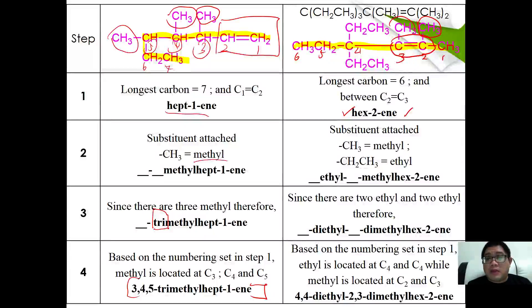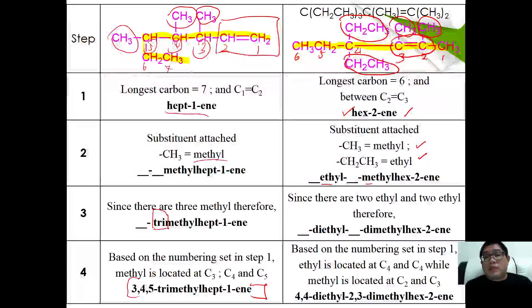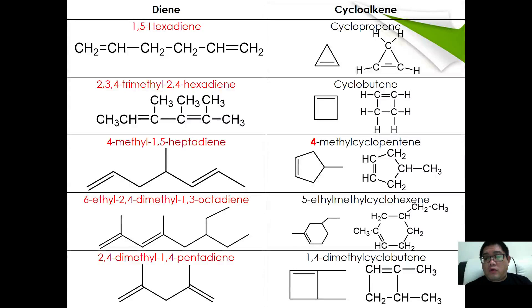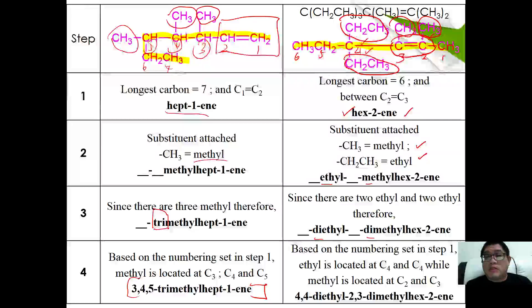In step two, we identify the alkyl groups: there is a methyl, another methyl, an ethyl, and another ethyl — so two substituent types: methyl and ethyl. In alphabetical order, ethyl comes before methyl. Since there are two ethyls and two methyls, we use the prefixes di-ethyl and dimethyl. The ethyls are at carbon four and four, and the methyls at carbons two and three, giving the full name 4,4-diethyl-2,3-dimethylhex-2-ene.